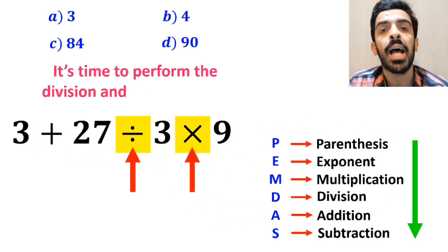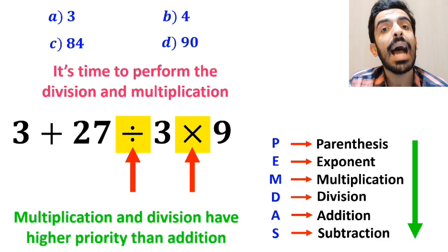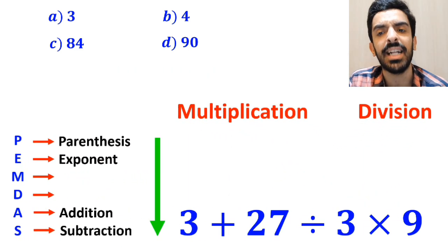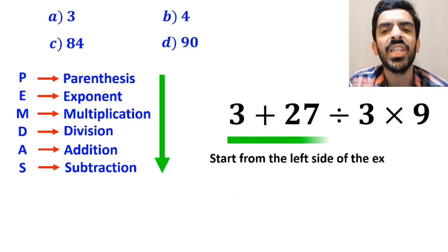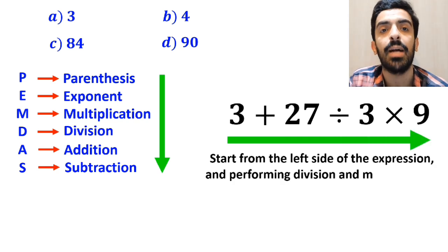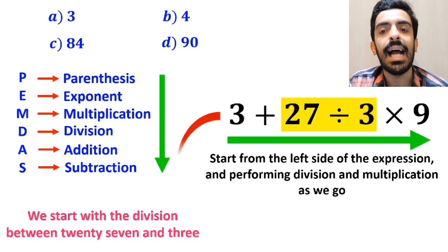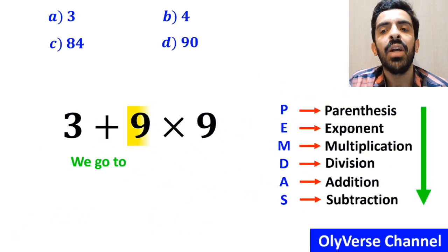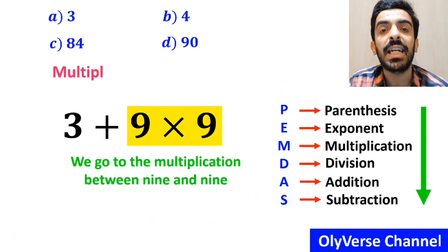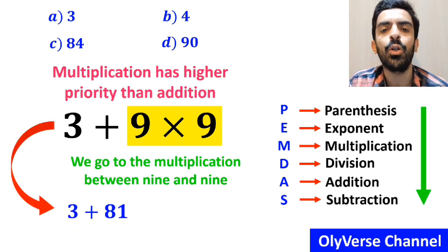Now it's time to perform the division and multiplication, because they have higher priority than addition. We must pay close attention that multiplication and division have equal precedence. In this case, the best thing to do is to start from the left side of the expression, performing division and multiplication as we go. So we start with the division between 27 and 3, writing 3 plus 9 multiplied by 9. In the final step, we perform the multiplication between 9 and 9, giving us 3 plus 81, which ultimately gives us the answer 84.